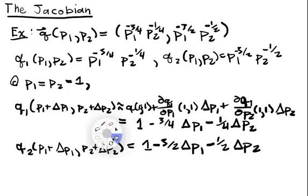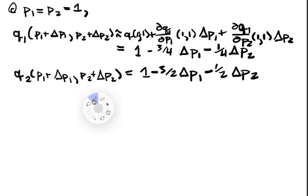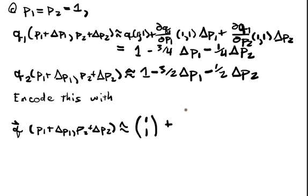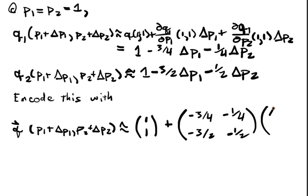Now this is all nice, but it's easier to represent this in terms of a nice matrix equation. We can code this with Q of P1 plus delta P1, P2 plus delta P2 is approximately vector 1,1. Those are the constant entries. And then plus this matrix that I obtained by the quantities that we're multiplying our delta P1 and delta P2 by. So this will be negative three fourths minus one fourth, negative three halves, negative one half. And this will multiply my change vector delta P1 delta P2.